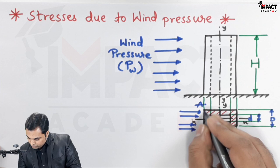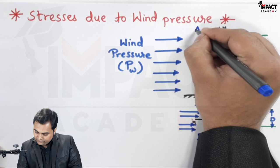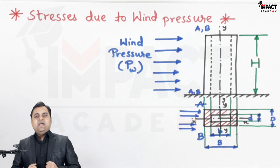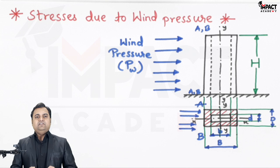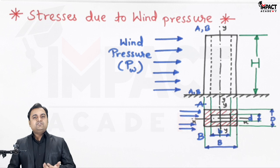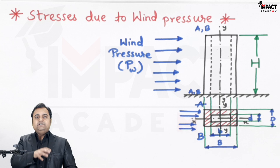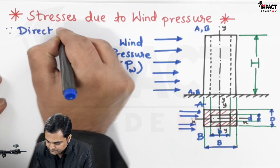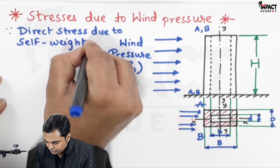So here we have face AB. Now, since these columns or chimneys subjected to wind pressure are made up of heavy masonry work or concrete structure, they have a huge amount of self-weight. So the compression in this column is due to the self-weight, because the weight is very large due to the concrete construction. There is direct compression because of the self-weight, so there would be direct stress due to the self-weight of the column or masonry, and that direct stress is denoted by sigma_d.